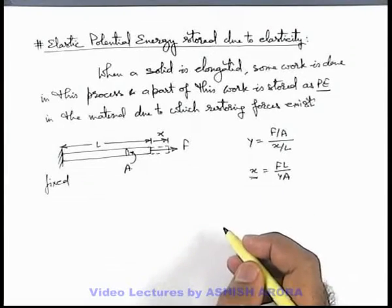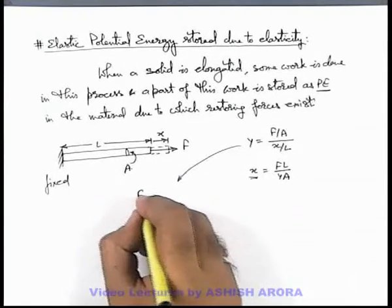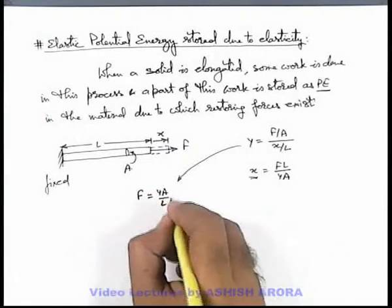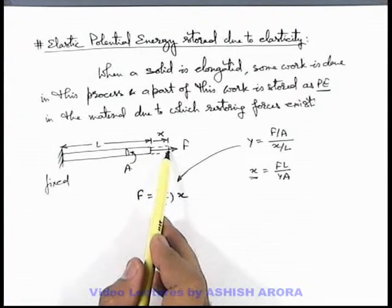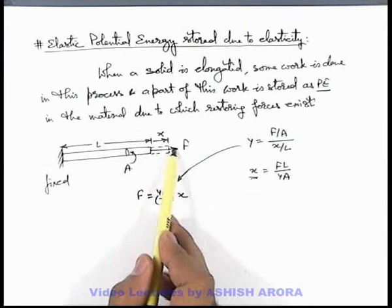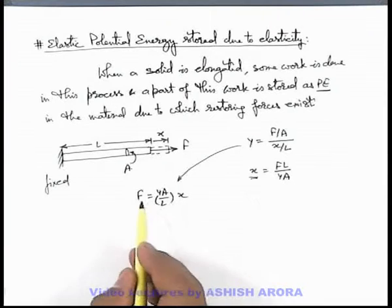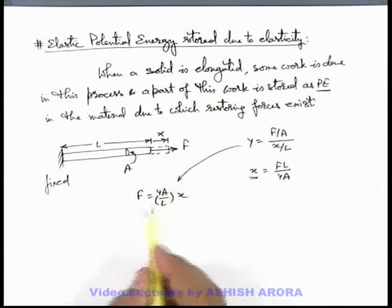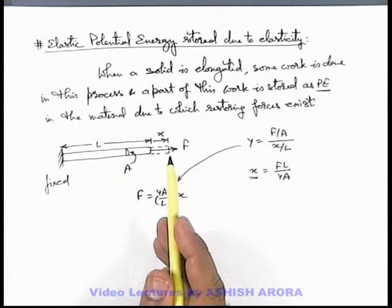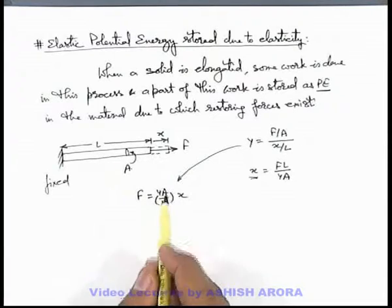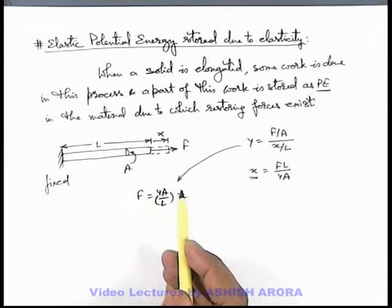Now if we carefully look at this expression, it can be rewritten as F equals YA/L into x. This means if the elongation in the rod is x, at equilibrium the external force required to maintain the elongation is YA/L times x. So this force is directly proportional to x — this is the situation as if the rod is behaving like a spring.